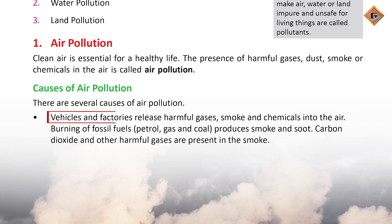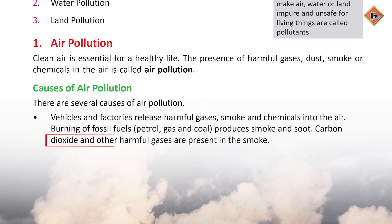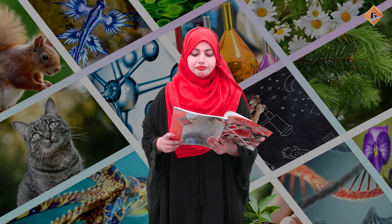Factories aur vehicles se jab dhuan nikalta hai to uske andar harmful gases hoti hai. Smoke aur harmful gases aur aise chemicals jo ke hamare liye harmful hote hain hamaari air ko pollute kar dete hain. Isi tarah jab hum fossil fuel ko burn karte hain — jaise ke petrol, gas, coal — toh uske andar se bhi dhuan nikalta hai, carbon dioxide release hoti hai, aur smoke banta hai jis ki wajah se hamaari air polluted ho jaati hai. Dust aur dirt bhi jab air ke andar mix ho jaate hain toh use pollute kar dete hain.